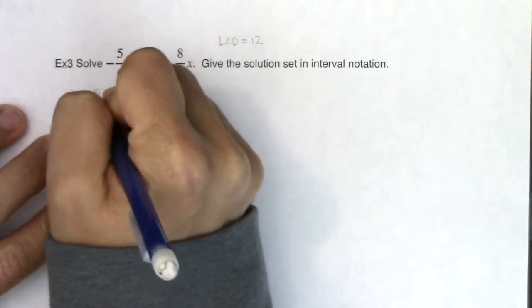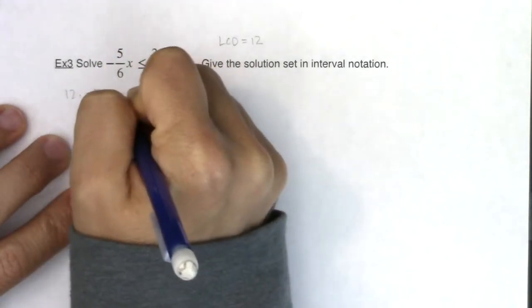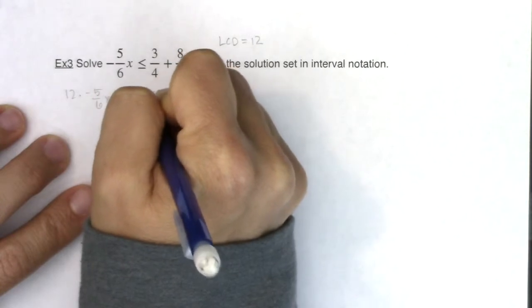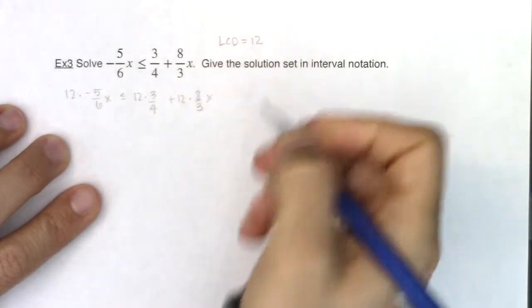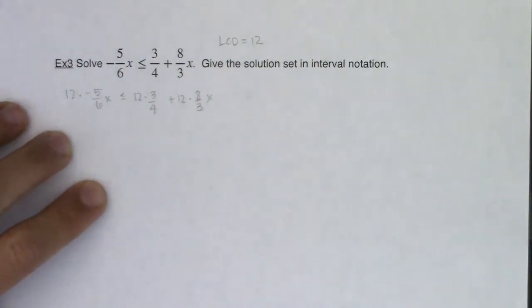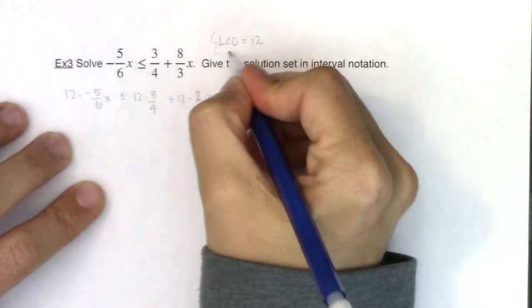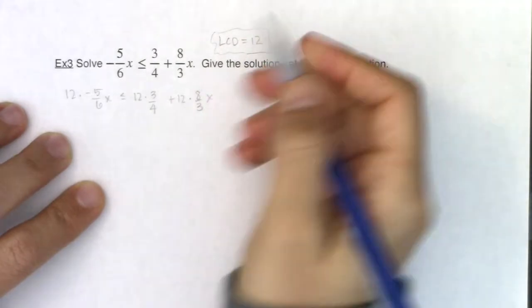So I'm going to do 12 times negative 5 sixths of x will be less than or equal to 12 times 3 fourths plus 12 times 8 thirds x. Now I don't need to change the direction of my inequality because I multiplied by 12, which is a positive number.